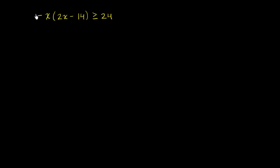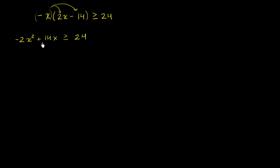On the left-hand side, we could distribute this negative x. If we did that, we would get negative 2x squared — negative times negative is a positive — plus 14x is greater than or equal to 24. Now I'm going to subtract 24 from both sides so that we have negative 2x squared plus 14x minus 24 is greater than or equal to 0.